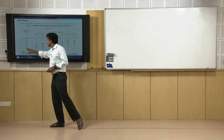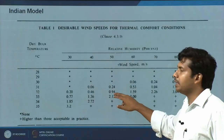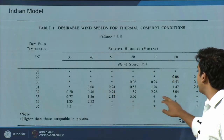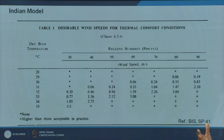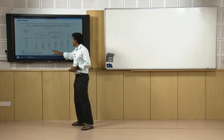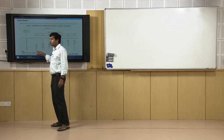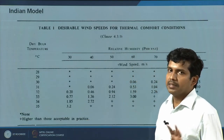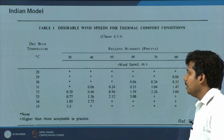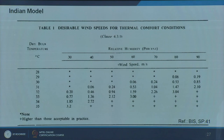As temperature increases, take 32 degrees: at 50% humidity, you already need 1 meter per second air velocity. At 80%, you need nearly 3 meter per second. When it increases further, comfort cannot be attained. At 35 degrees and 30% humidity, you need 3 meter per second to be comfortable, and beyond a slight increase in humidity, comfort cannot be attained.